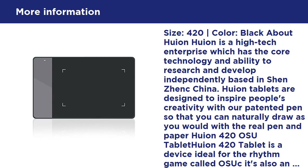Point specifications: technology — electromagnetic digitizer; active area — 4x2.23 inches; resolution — 4000 LPI; report rate — 200 RPS; pen pressure — 2048 levels; reading height — 0.6; supply voltage — DC 5V; power consumption — 0.35W. OSU support: Windows 10, 8, 7, XP, and Mac 10.8.0 or above. Interface: USB, cable length 1.5 meters. Compliance: CE/FCC/CCC.